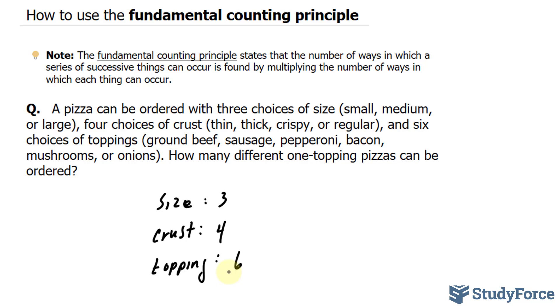Now, to do this, you'll take three, four, and six and multiply them together. And by doing that, you'll get the different one-topping pizzas that can be ordered. So we'll multiply three times four times six. And if you plug this into your calculator, you'll end up with 72. So there are 72 different one-topping pizzas that can be ordered.